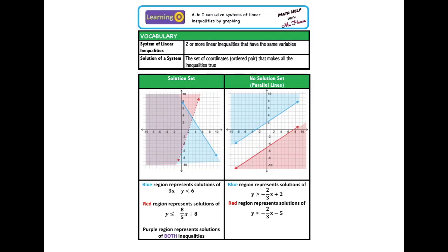Welcome back to Math Help with Miss Harris. Today's learning target is: I can solve systems of linear inequalities by graphing. Systems of linear inequalities are two or more linear inequalities that have the same variables. The solution is the set of ordered pairs that makes all of the inequalities true. There are an infinite number of solutions, or there can be no solution. The solution is any point in the overlapping sections of each inequality, and if there's no solution, the inequalities never overlap.